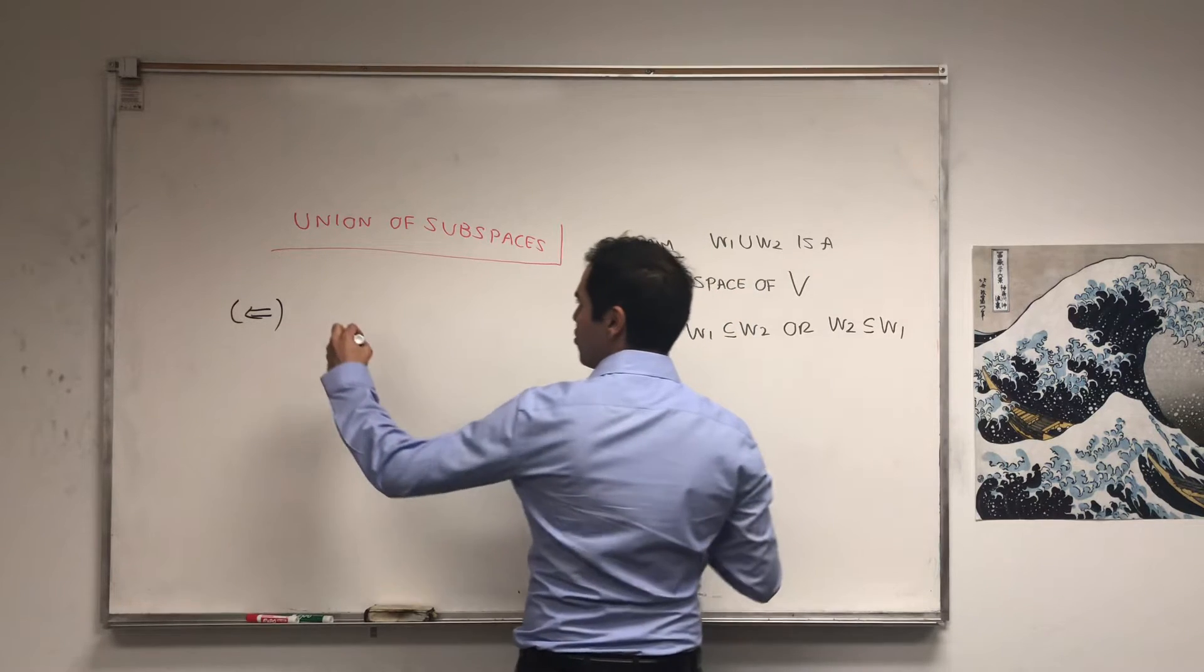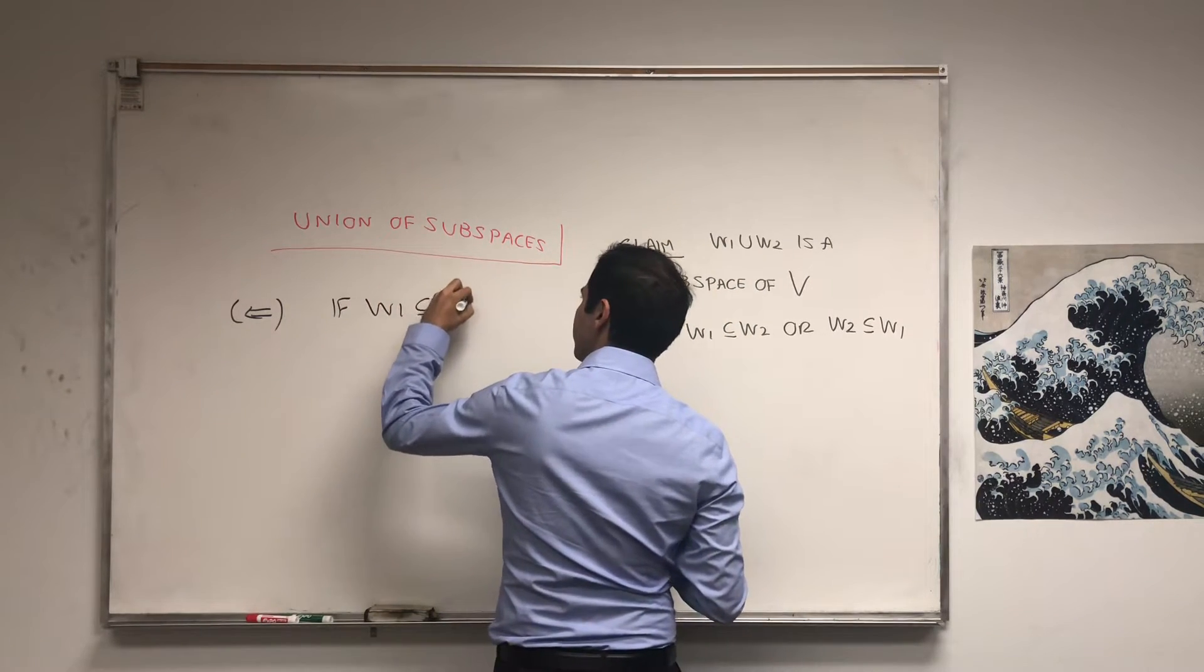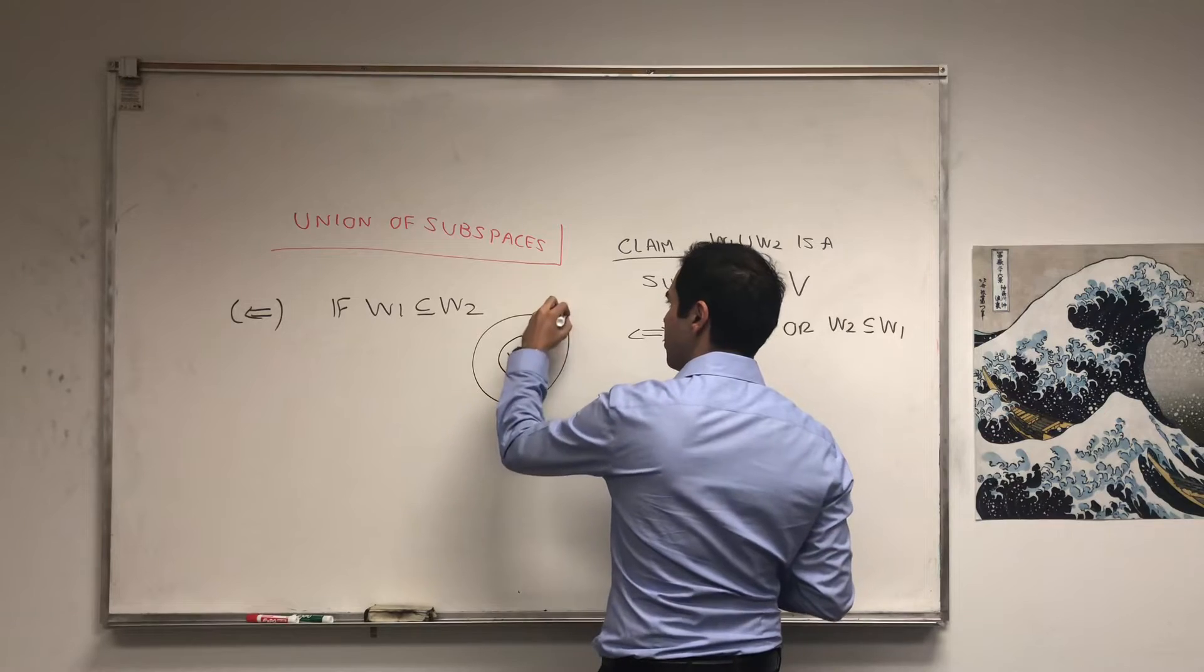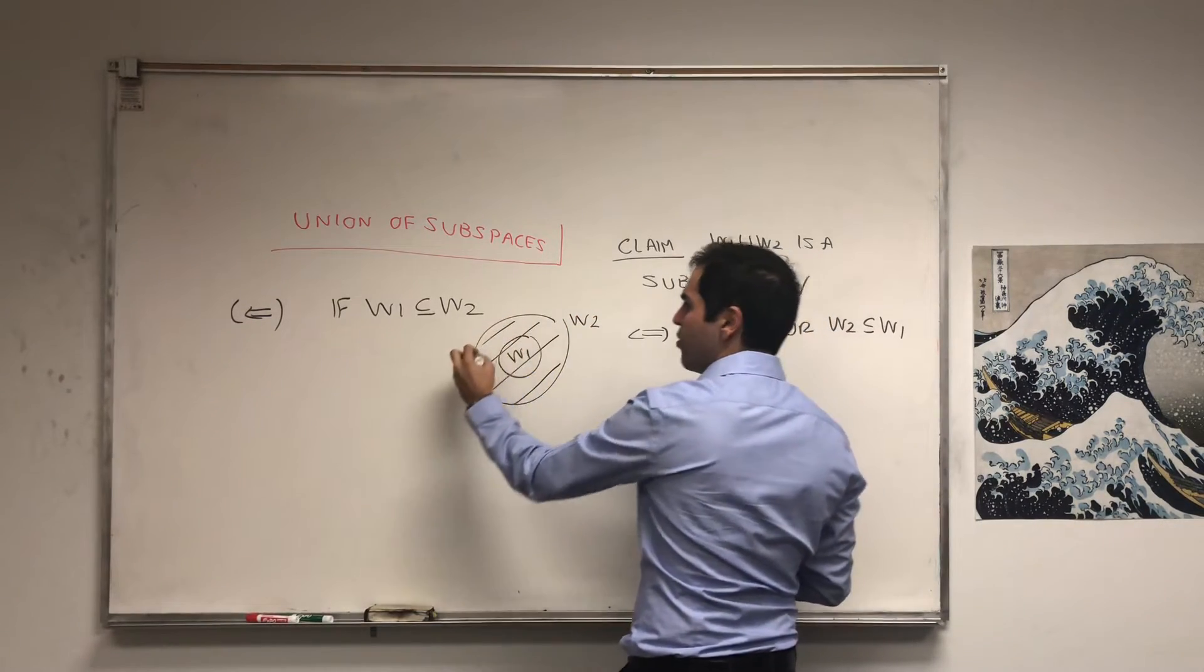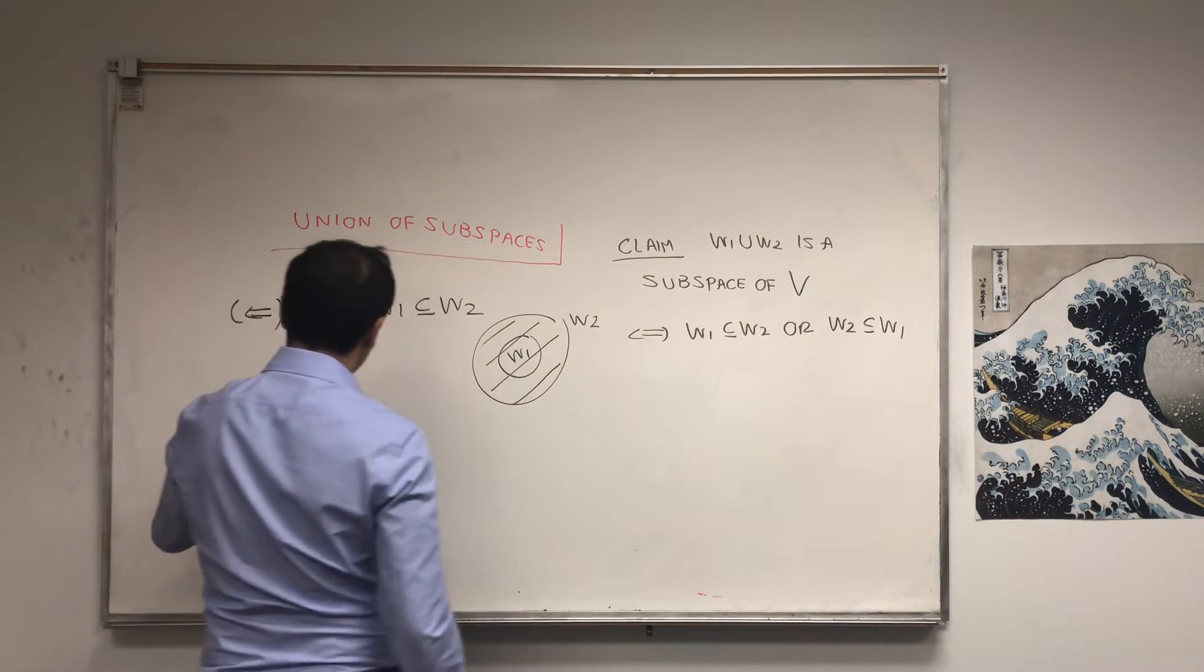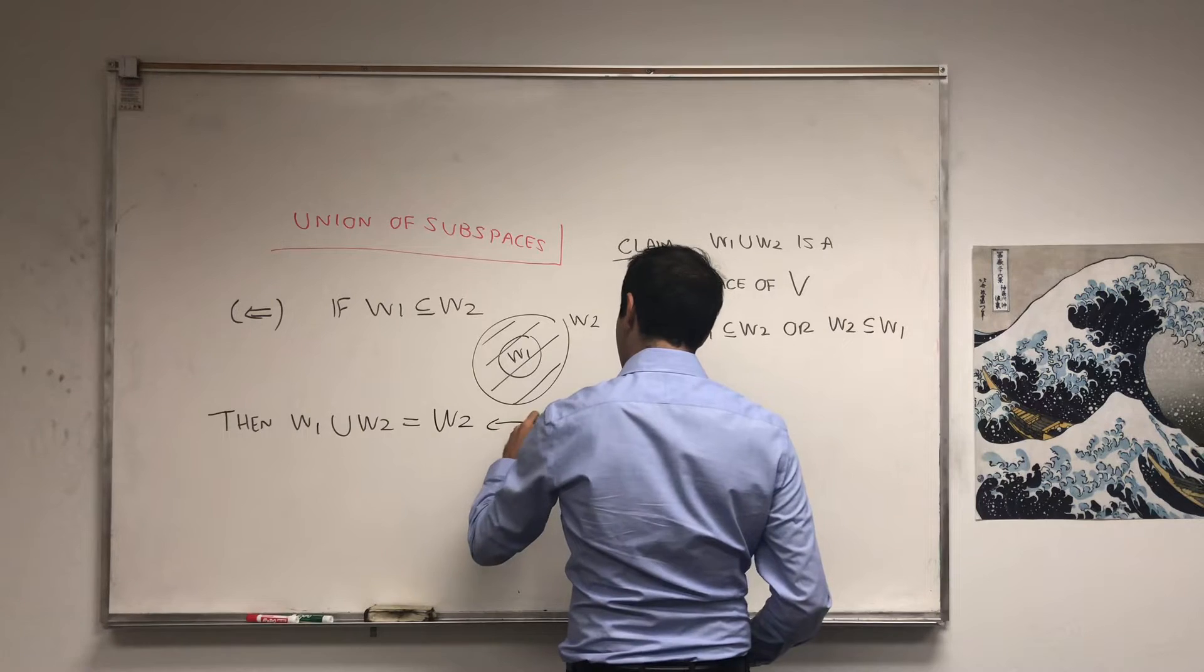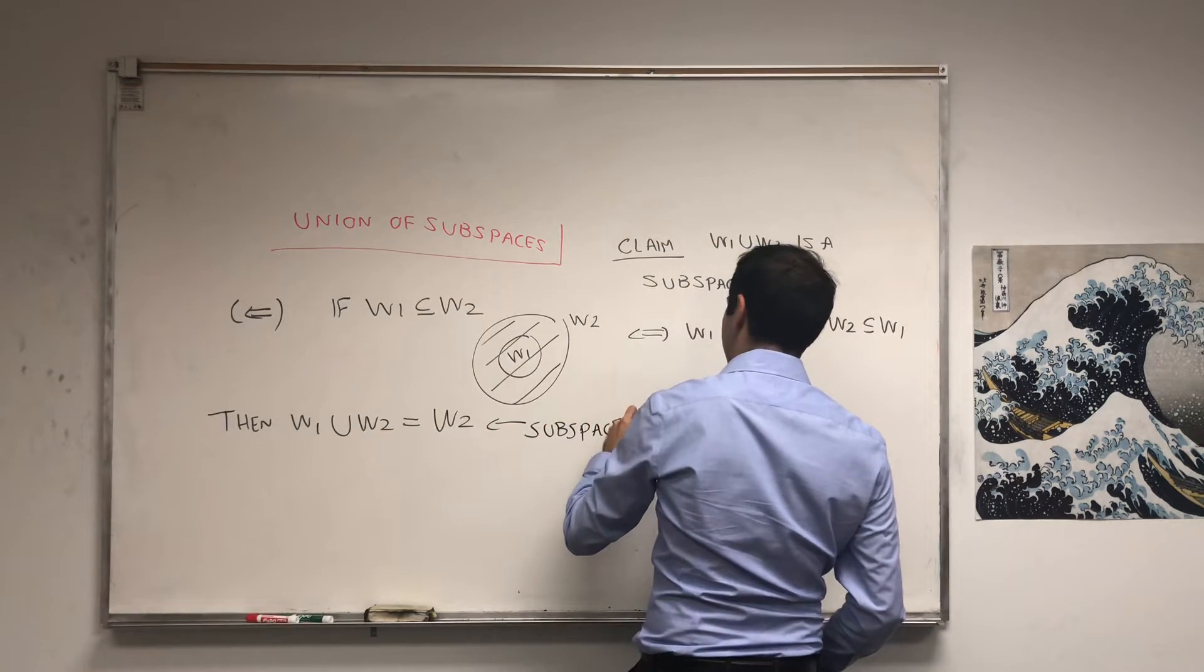Because suppose the first thing holds. If W1 is a subset of W2, then what is the union? So if W1 is strictly smaller than W2, then the union is just the bigger one. Then W1 union W2, that's W2. And W2 is a subspace.